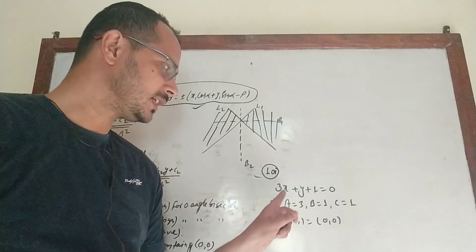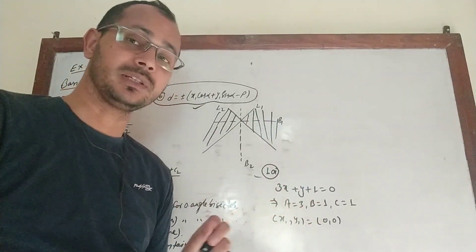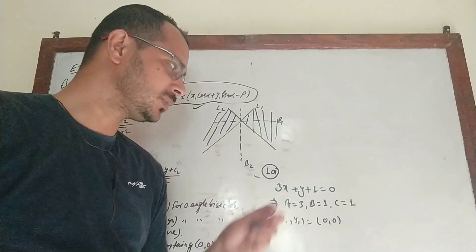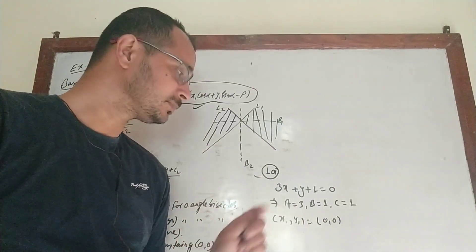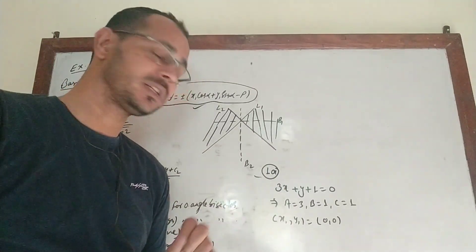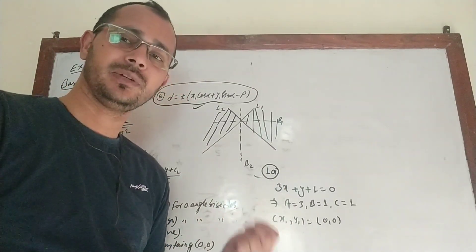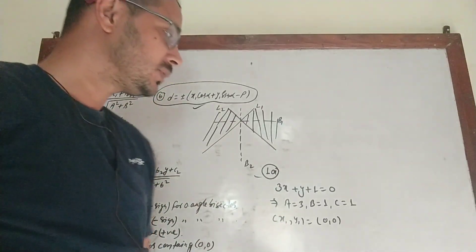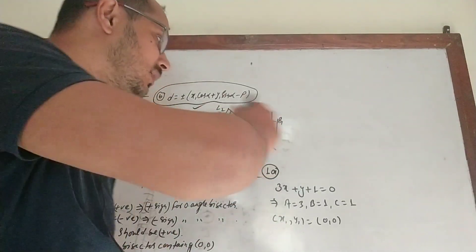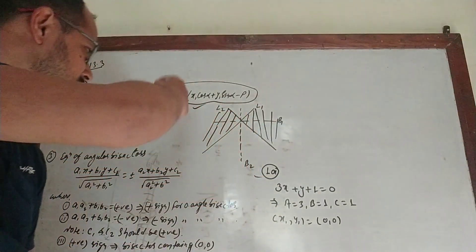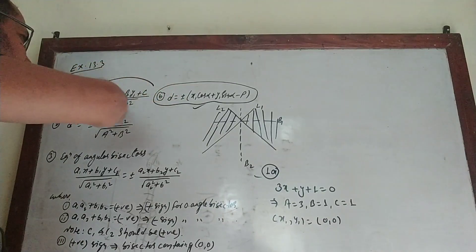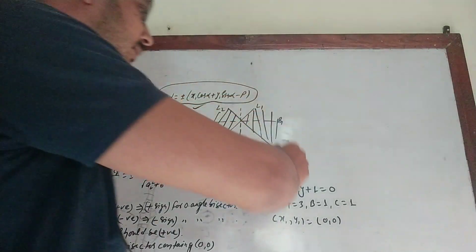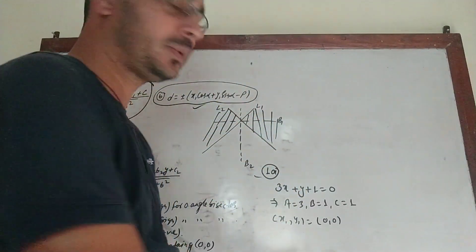Comparing with ax + by + c = 0, we get a = 3, b = 1, c = 1. The point is the origin (0, 0), so x1 = 0, y1 = 0. We can now determine the perpendicular distance using the formula. Substituting the values, we get: |a·x1 + b·y1 + c| / √(a² + b²) = |0 + 0 + 1| / √(9 + 1) = 1 / √10.